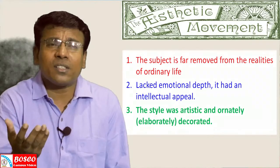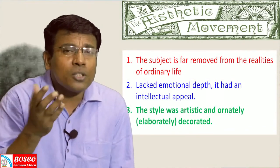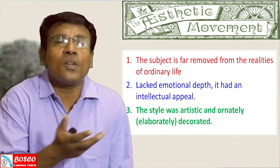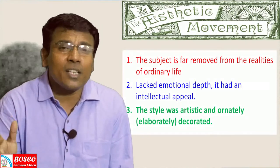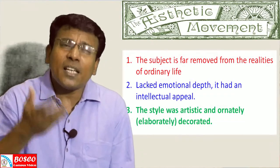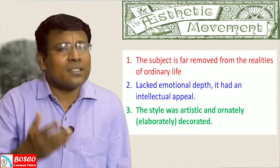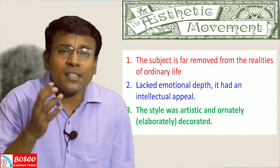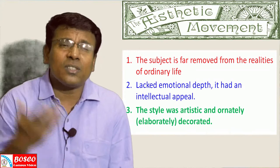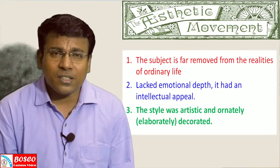The first characteristic of Oscar Wilde's literary works is that the subject is far removed from the realities of ordinary life. The second is that his work lacked emotional depth but had great intellectual appeal — full of wit. The third characteristic is that the style was artistic and elaborately, ornately decorated. These are the three key characteristics of Oscar Wilde's literature.